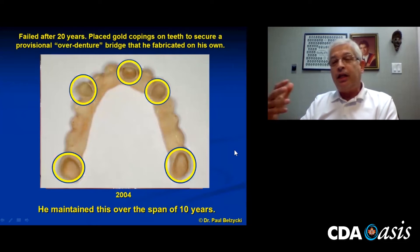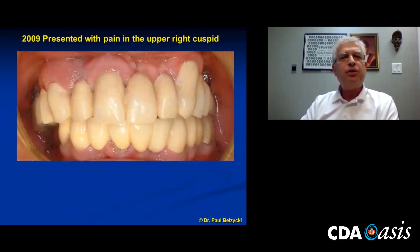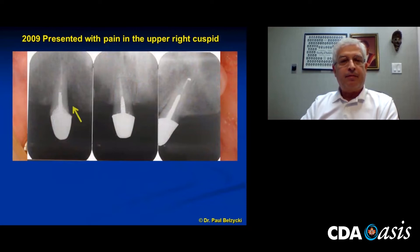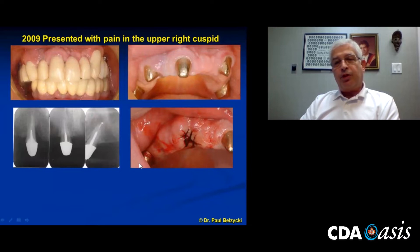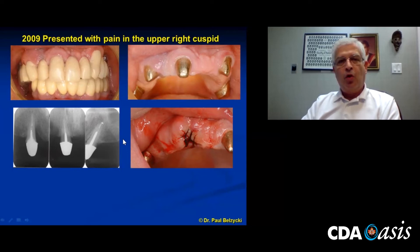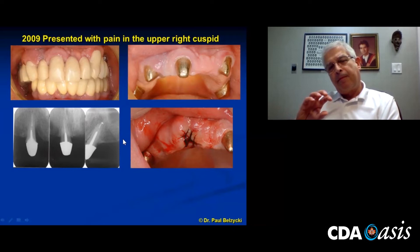Then he presented in 2009 with pain in the upper right cuspid. The cases looked pretty decent — there was no recurring decay — but there was a bony angular defect, which is usually indicative of a cracked tooth, and that's indeed what happened. So I had to extract that tooth. We'd often talked over the years about doing an implant case, thinking this provisional appliance he'd fashioned would be the stop gap, or we could use it converting from an overdenture on teeth to something on implants. But we were busy, and often symptoms drive treatment.